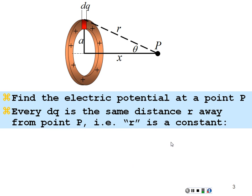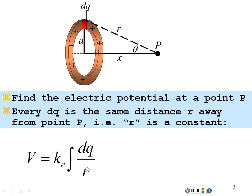Let's try for a ring of charge — a ring of continuous charge distributed around its perimeter. We want to find the potential at some point P that is a distance x from the center of the ring, the ring having radius a. So dq is a distance r away from point P, and so is every point along this ring as we go around it. Every point is going to be the same distance r away. So our potential is equal to k times the integration of dq over r, but r is constant because it doesn't change as we go around this ring.